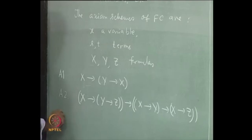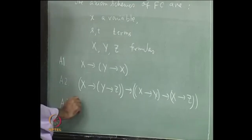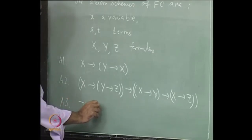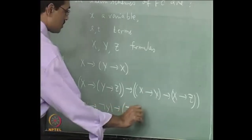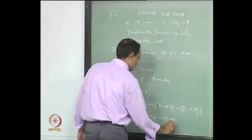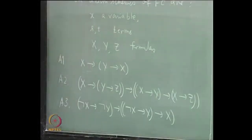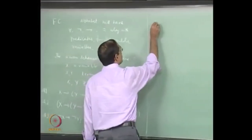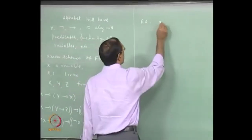Then we have A3, which is for the negation sign: not X implies Y implies not Y, implies not Y implies not X implies Y. So that should give us X, the law of contradiction. Then we have the other axioms peculiar to FC. First we will take the quantifier form.